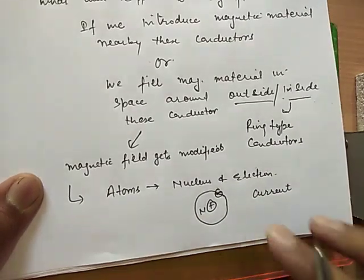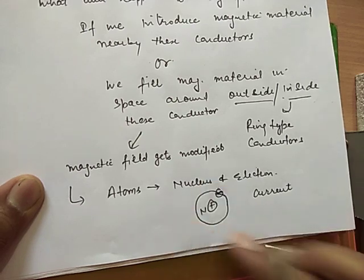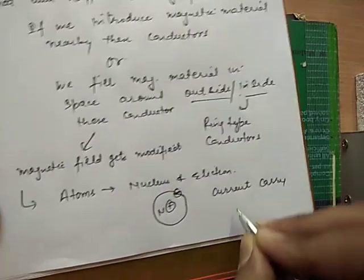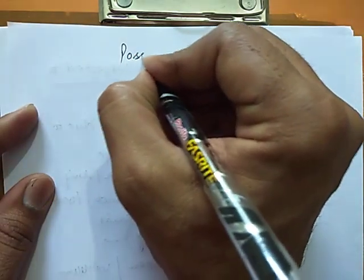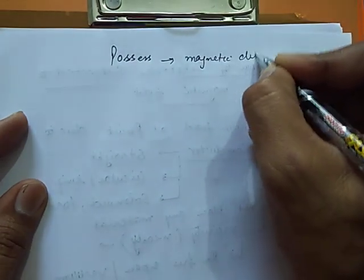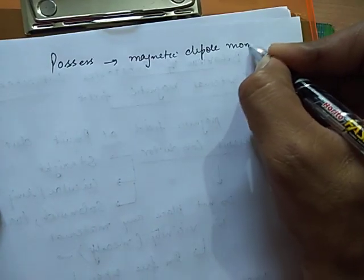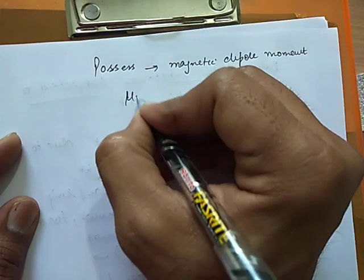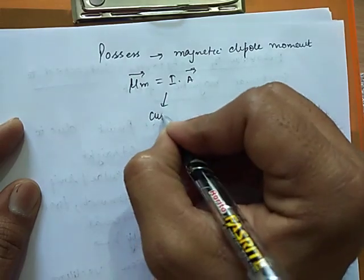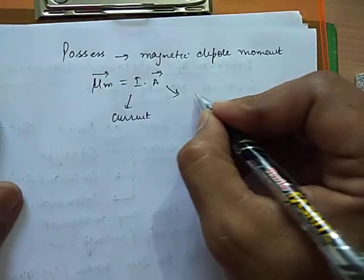So we can say that the revolving electron is equivalent to current carrying loop. Now this current carrying loop possesses magnetic dipole moment. This moment is given by I into A where I is current and this is area vector of current loop.